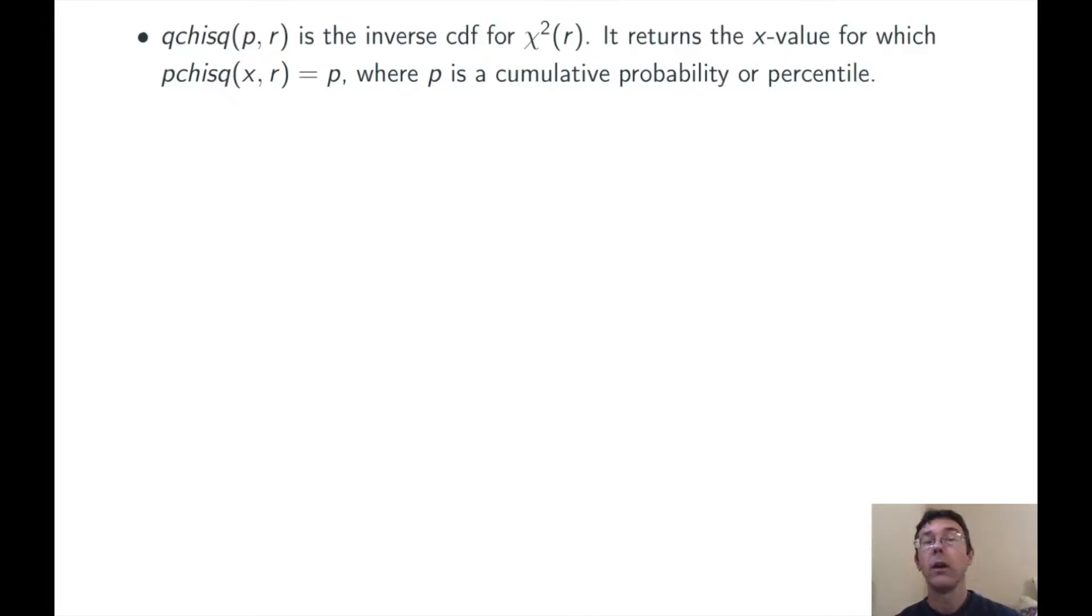Third, qchisq. That's the inverse CDF for the chi-squared distribution with R degrees of freedom. It returns the x value for which pchisq of X comma R is equal to P, where P is a cumulative probability or percentile.